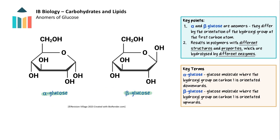Alpha and beta glucose molecules are isomers. They have the same molecular formula and same structural arrangement of atoms, except for the orientation of the hydroxyl group on the first carbon atom. In alpha glucose the hydroxyl group is orientated downwards, whereas in beta glucose it is orientated upwards. This difference results in different bond formations and so different overall structure and properties in the resulting polysaccharides. It also means they are hydrolyzed by different enzymes.